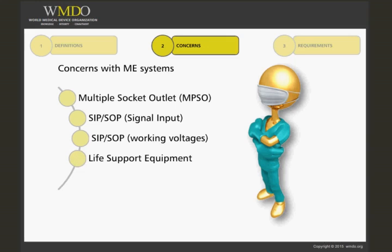The next concern has to do with life support equipment, since its function could be affected by electromagnetic compatibility, the interconnections, and proximity of other equipment, which must be taken into account. For example, if a computer is part of the system, the electromagnetic compatibility it emits and the conductive radiation must not affect the medical device in that system.